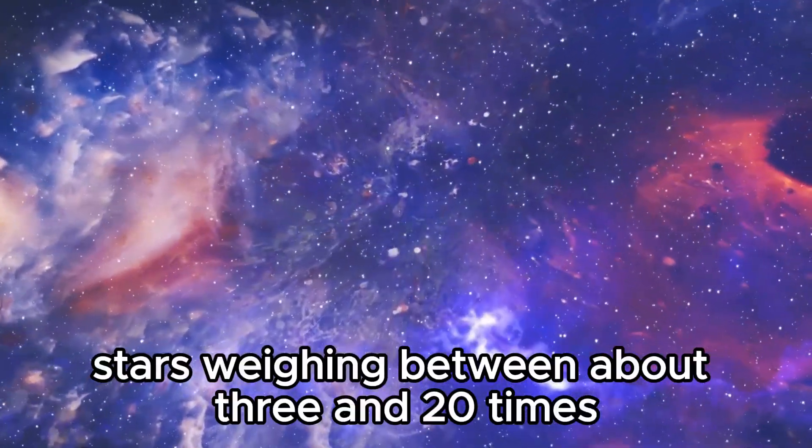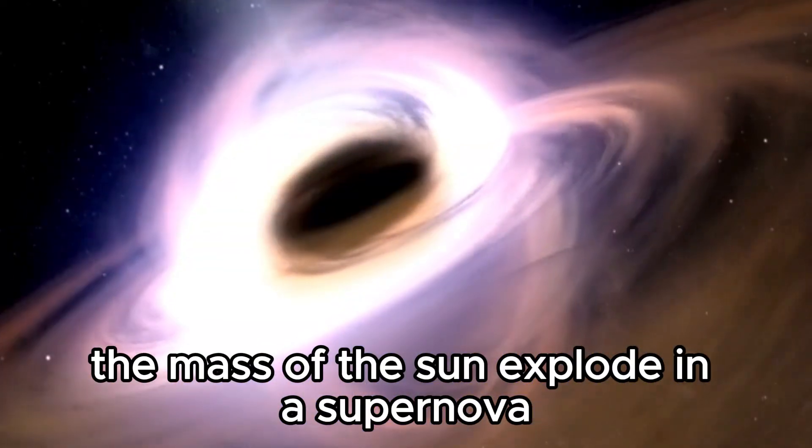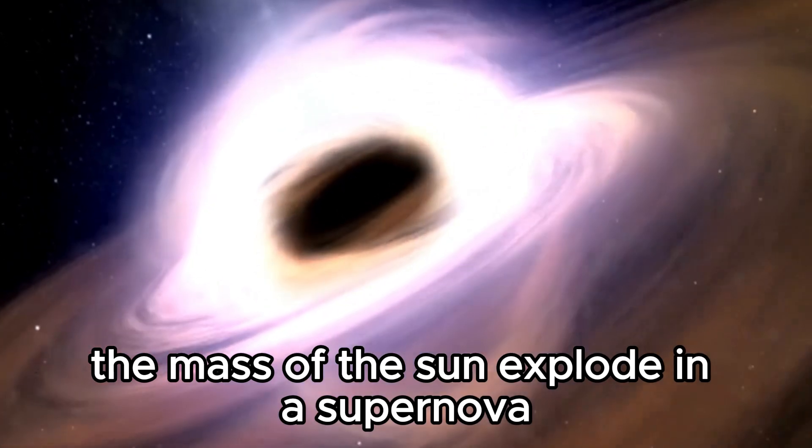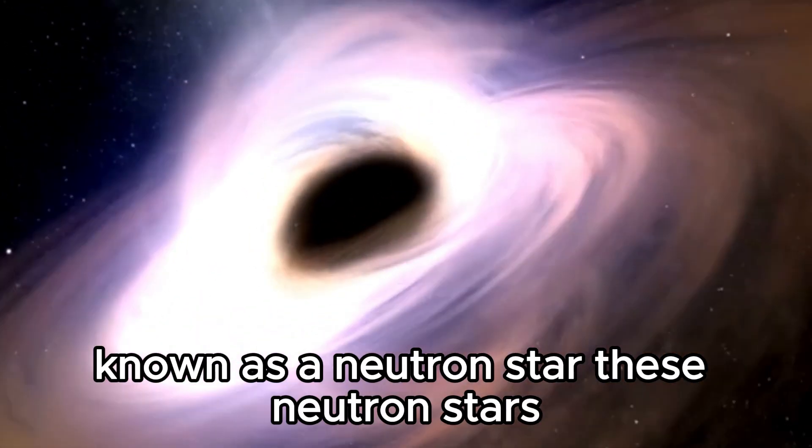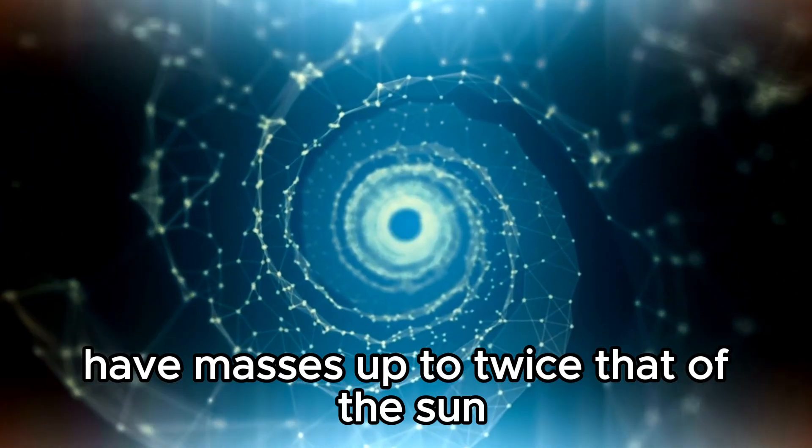Stars weighing between about three and twenty times the mass of the sun explode in a supernova, leaving behind a superdense ball known as a neutron star. These neutron stars have masses up to twice that of the sun, but are only about ten kilometers in radius.